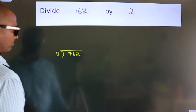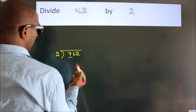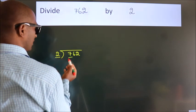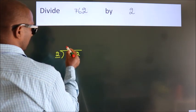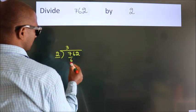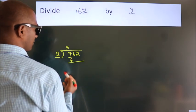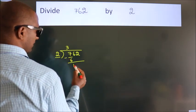Next, here we have 7, here 2. A number close to 7 in the 2 table is 2 times 3 equals 6. Now we should subtract. We get 1.